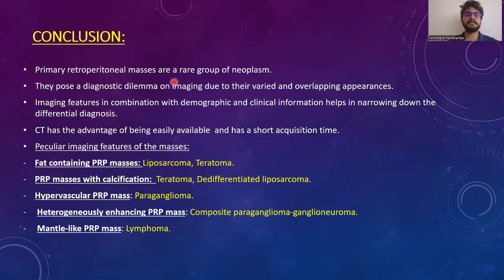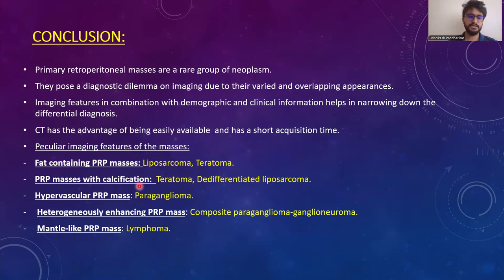In conclusion, primary retroperitoneal masses are a rare group of neoplasms that pose a diagnostic dilemma due to their varied and overlapping imaging appearances. Imaging features in combination with demographic and clinical information help narrow the differential diagnosis. CT has the advantage of being easily available with a short examination time. Key imaging features include: fat-containing masses suggesting liposarcoma or teratoma; calcification suggesting teratoma or dedifferentiated liposarcoma; hypervascular mass suggesting paraganglioma; heterogeneously enhancing mass suggesting composite paraganglioma or ganglioneuroma; and mantle-like primary mass suggesting lymphoma.